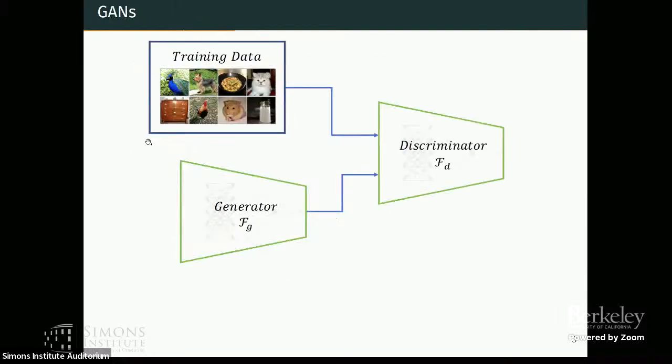So GAN is nothing but this adversarial game of two networks, a generator and discriminator network. The discriminator network takes in two sets of samples, the real samples and the ones generated by the generator, and it computes this maximum expected discrepancy between these two sets.